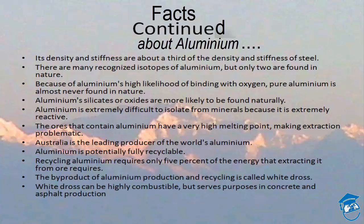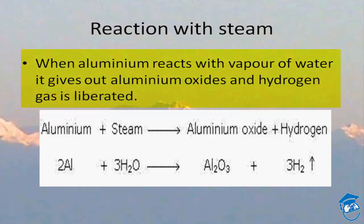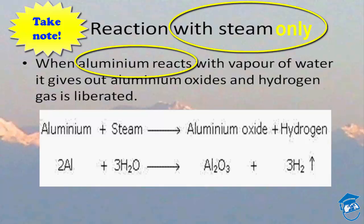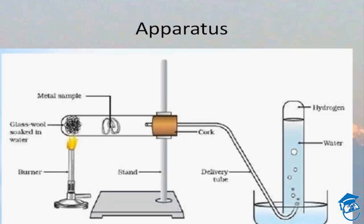That is a brief overview of the uses, importance, and facts of aluminium. Now let's move to the reaction part. When aluminium reacts with water vapor — that is, steam — it produces aluminium oxide and hydrogen gas is liberated. Please note that aluminium does not react with cold water or boiling water; it reacts with steam only. In the apparatus used for this reaction, there is a metal sample — aluminium — and glass wool soaked in water.